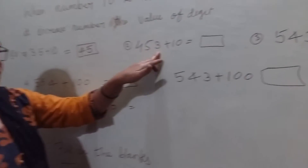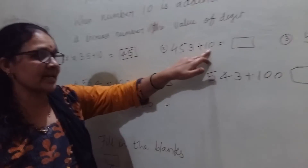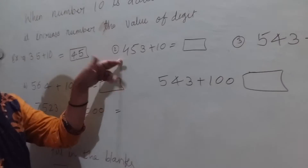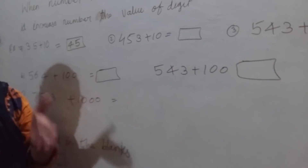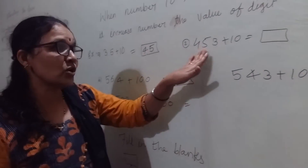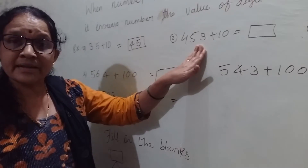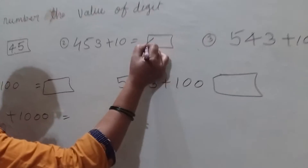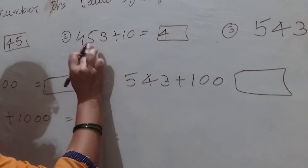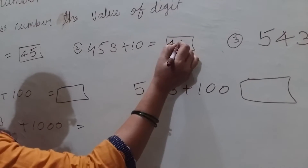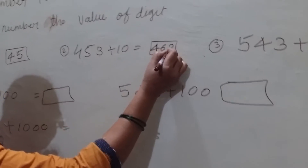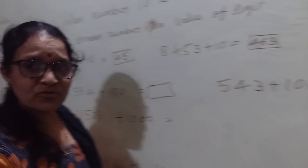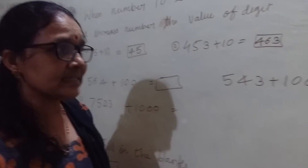Now see: 453 plus 10. You don't change the hundreds place. You have to change only the tens place. The other digits stay as they are.